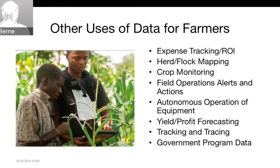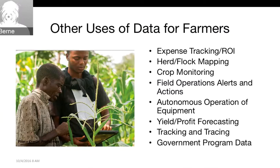Other uses include expense tracking and return on investment — if you buy a piece of equipment, how do you know you're getting your return on it? Some people use data to map their herds and flocks, whether using monitors or a drone to fly over and see where the herd is. Crop monitoring can use sensors or imagery for field operations alerts and actions — for example, if your crop is being stressed, sensors today can give you an alert about that.